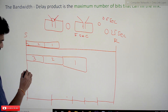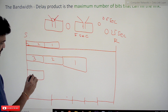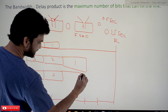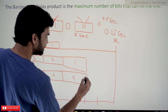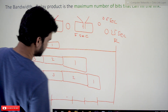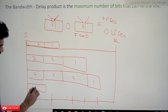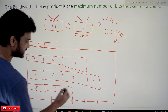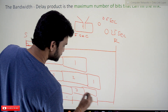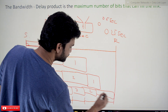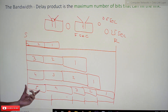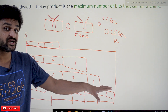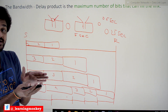In the 4th second, the 4th bit is at the start, 3rd bit in the middle, 2nd bit further along, and the 1st bit near the receiver. In the 5th second, the 5th bit enters as the 1st bit arrives at the receiver — so the channel is filled with bits 1 through 5. The number of bits that can fill the channel depends on bandwidth and delay.